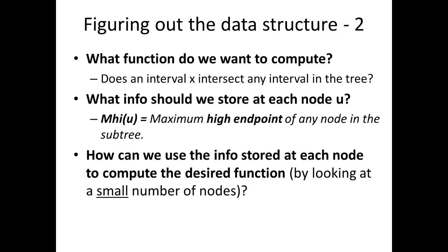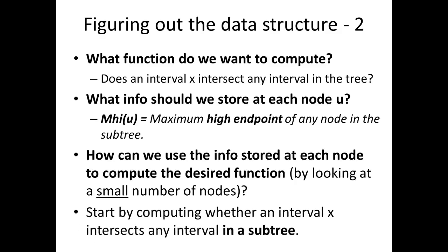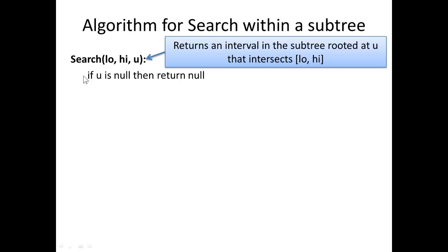How can we use this augmented information to compute the desired function efficiently — meaning by looking only at a small number of nodes? We want to look at information available only in a small constant number of nodes close to u. We're going to modify the question slightly: does an interval x intersect any interval in the subtree rooted at u? Once we've solved that, we will have solved it for the whole tree. So let's think about an algorithm for this special search within a subtree. Search has three arguments: low and high — the endpoints of the interval we're looking for — and u, the node we're starting at.